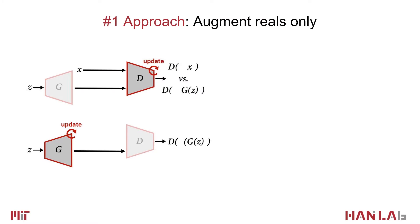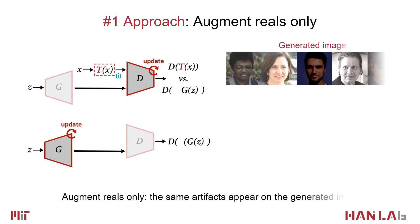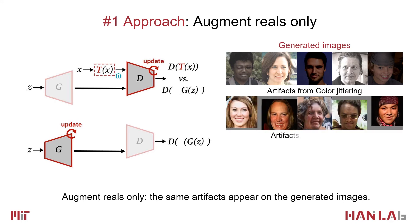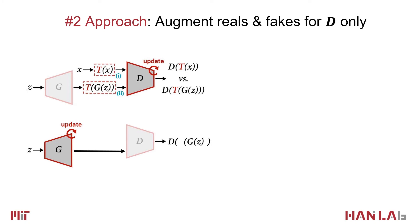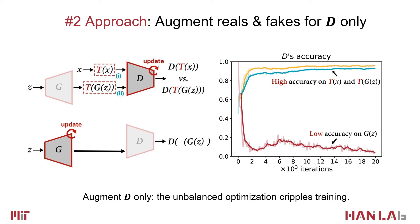A widely used strategy to reduce overfitting in image classification is data augmentation. However, if the augmentation T is only added to the real images, the generated outputs would suffer from introduced artifacts — for example, an unnatural color, translation padding, or a region being masked. Alternatively, we can augment both the real and generated images only when training the discriminator. However, this strategy leads to even worse results as the generator and the discriminator are optimizing completely different objectives.